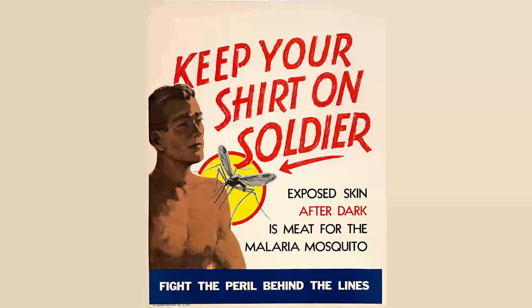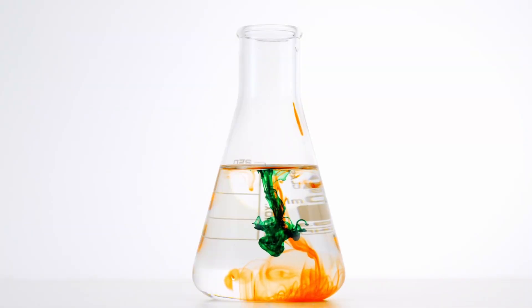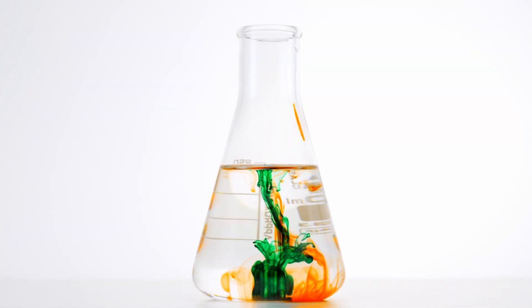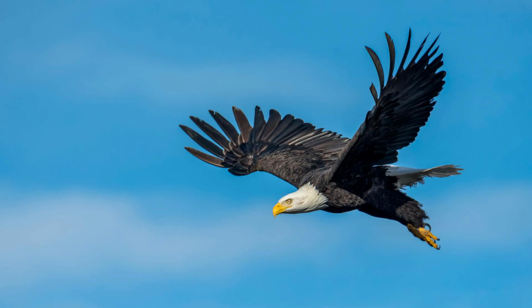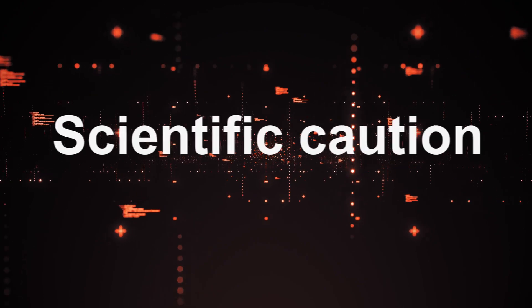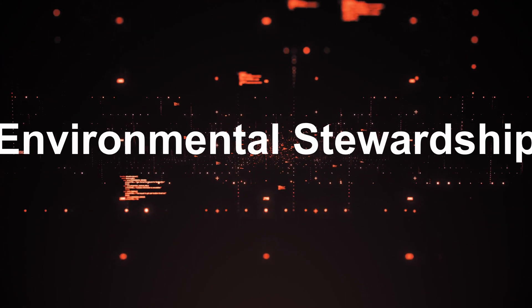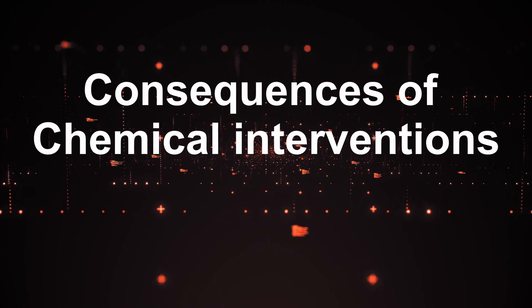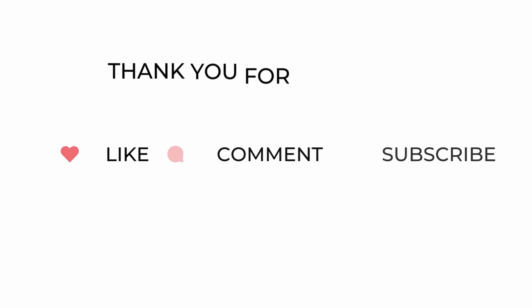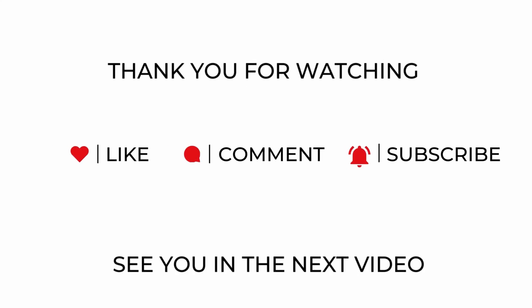DDT's history is complex, representing both the power and the peril of chemical interventions. While it saved numerous lives in the fight against malaria, its unintended effects on ecosystems and wildlife cannot be overlooked. As we move forward, it is crucial that we continue to learn from the past. The legacy of DDT reminds us of the importance of scientific caution, environmental stewardship, and the need for careful consideration of ecological consequences in all chemical interventions. Thank you for watching — if you have any video ideas, comment them below and we'll see you in the next video.